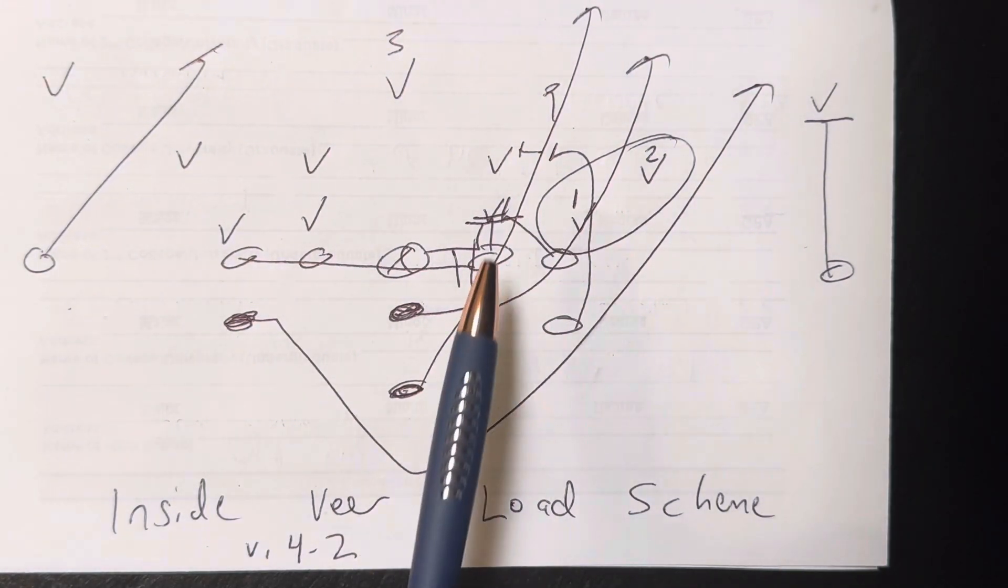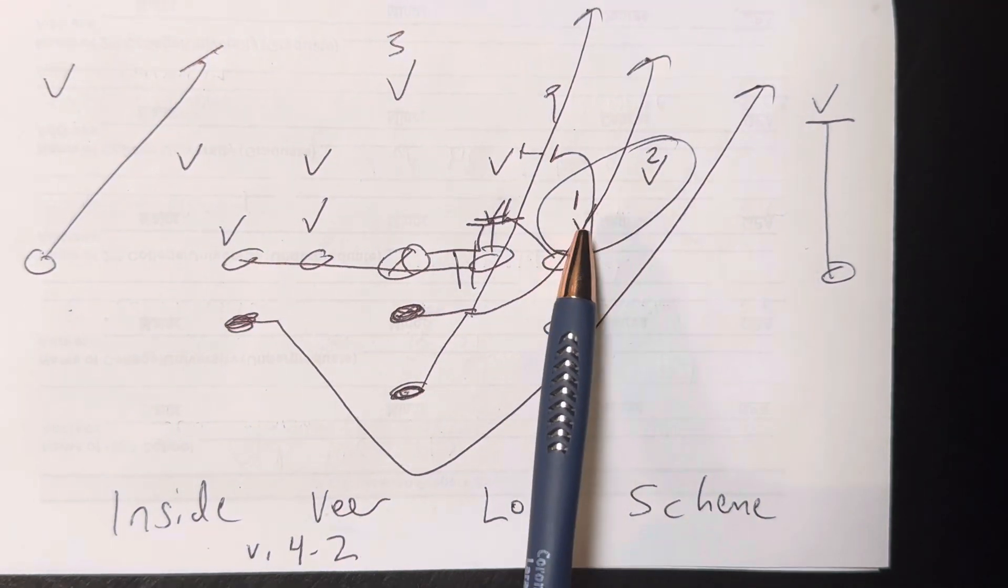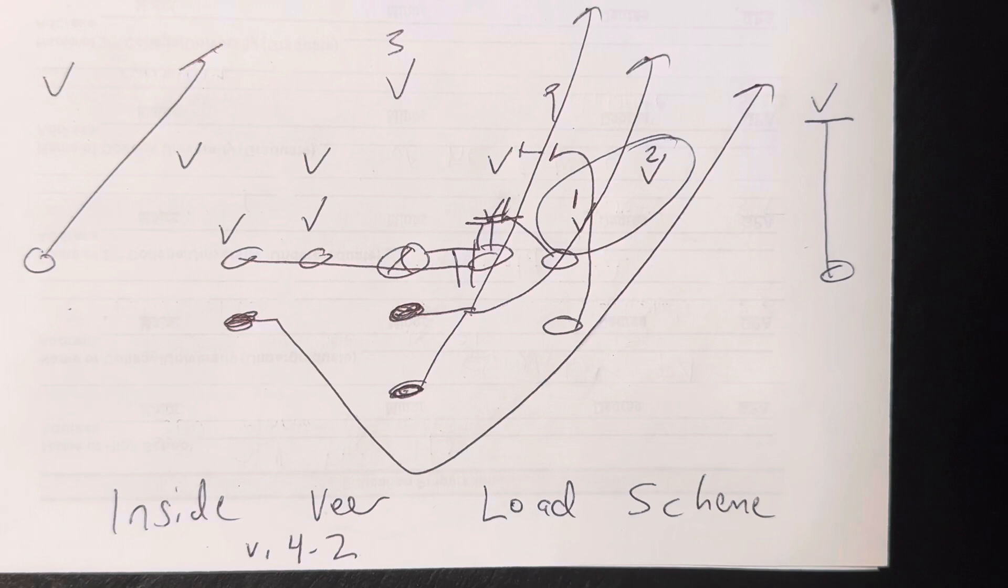This is how you're able to triple team the defensive tackle on inside veer. But let me put this into perspective. You really should only be running inside veer if this guy's taking the B back on his own dive.